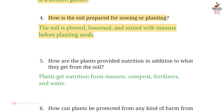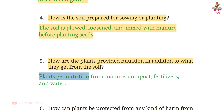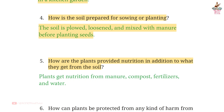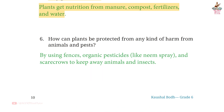Question 5: How are the plants provided nutrition in addition to what they get from the soil? Answer: Plants get nutrition from manure, compost, fertilizers, and water.